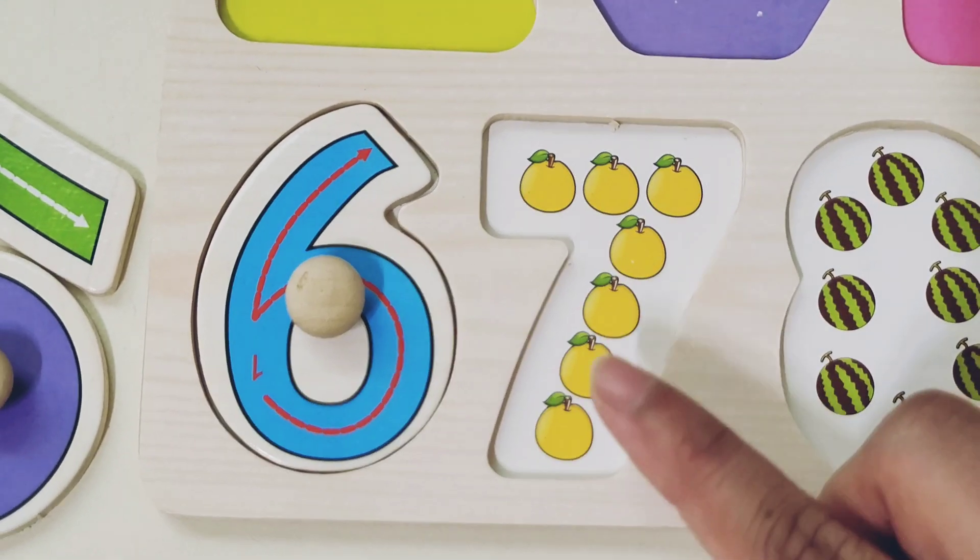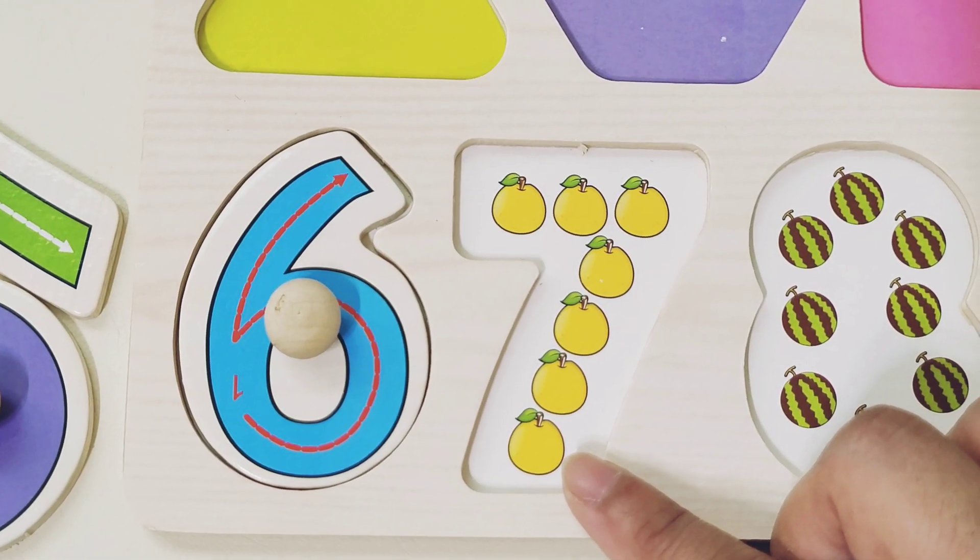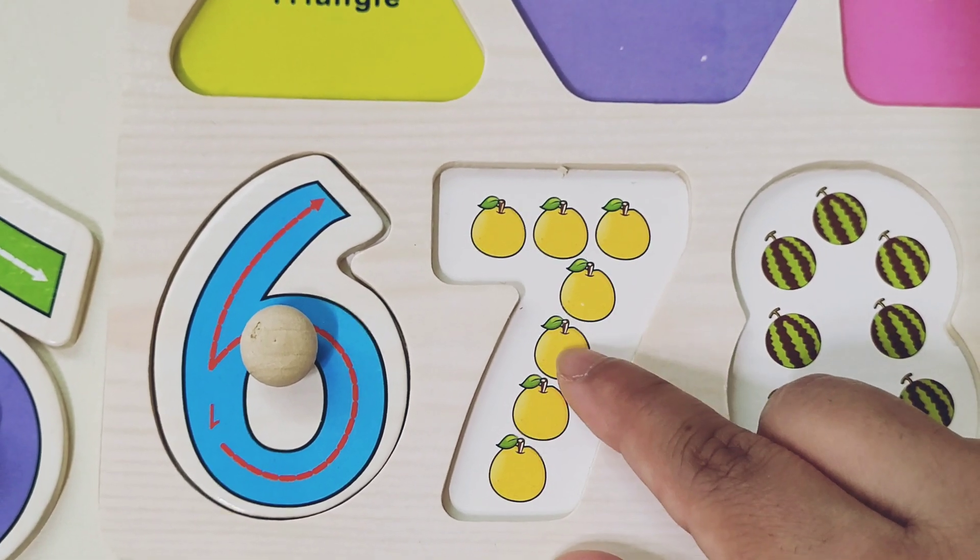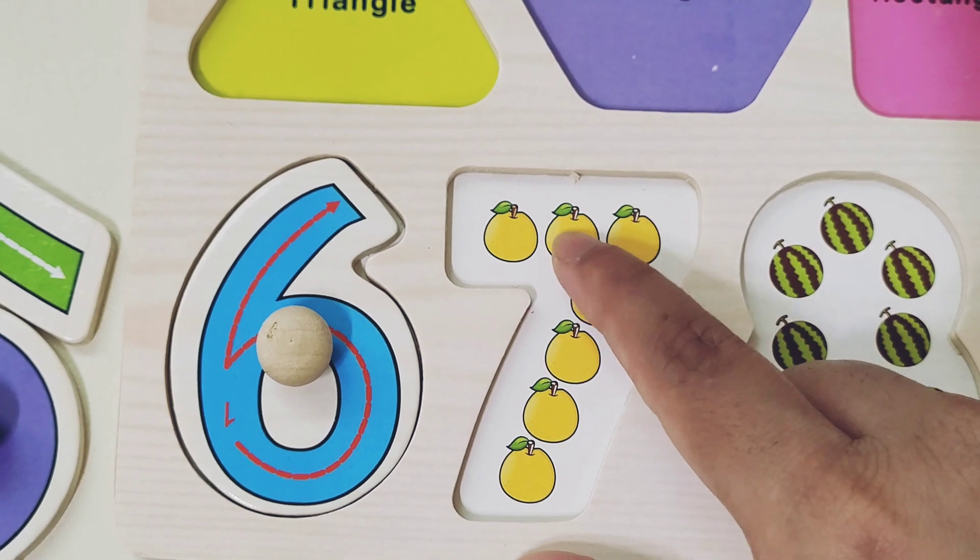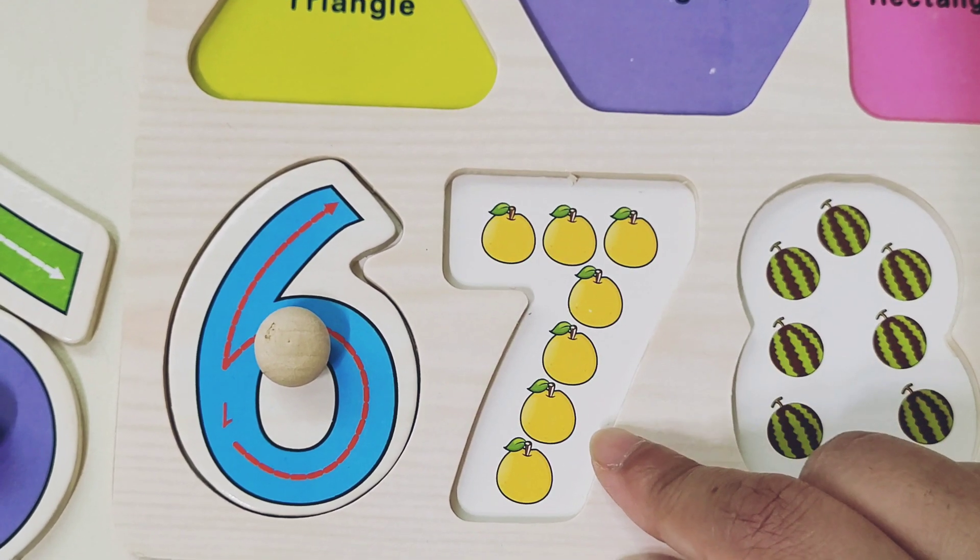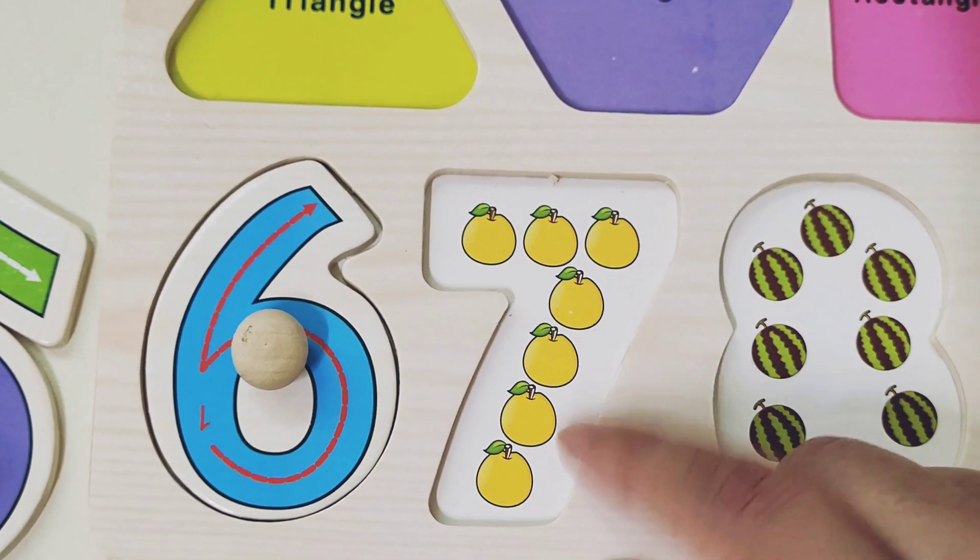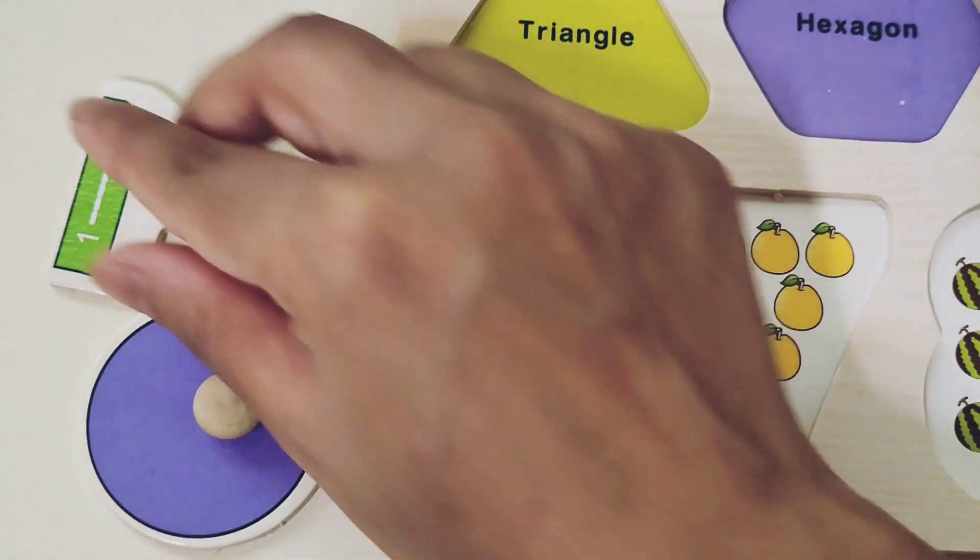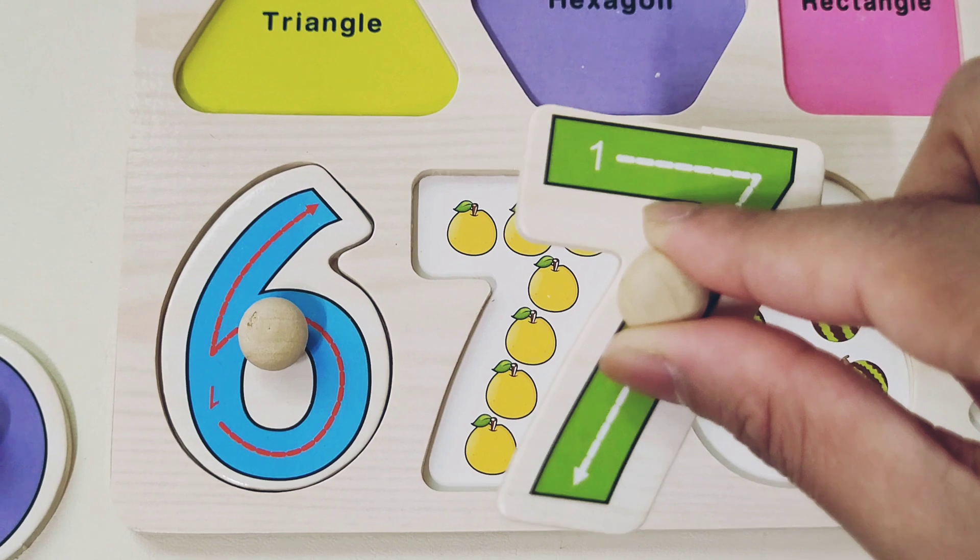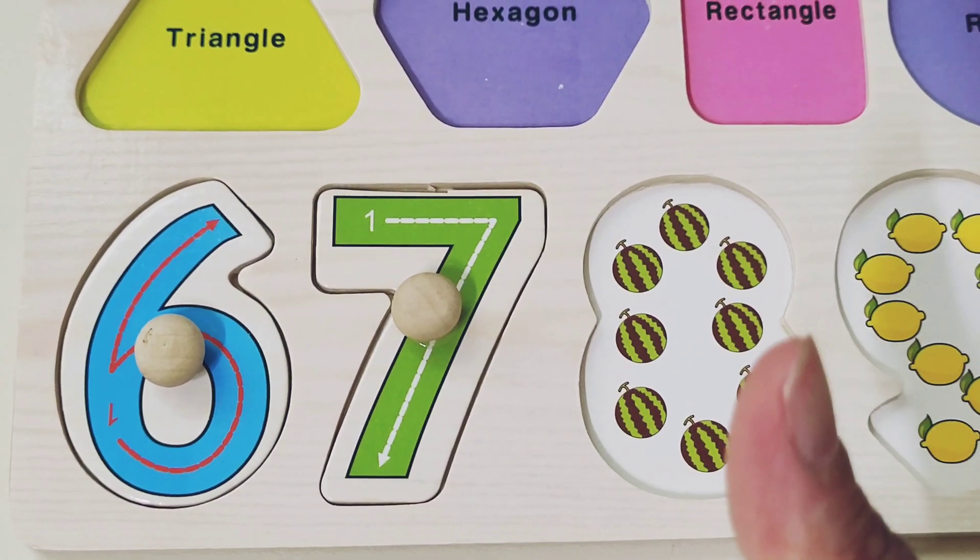Now, can you count how many fruits are here? 1, 2, 3, 4, 5, 6, 7. 7 pomelos! These are yellow in color. Let's find the number 7. It's right here. Let's put this number 7 here. Great job!